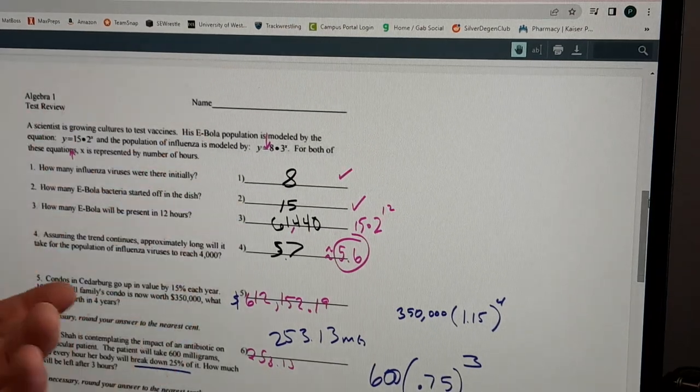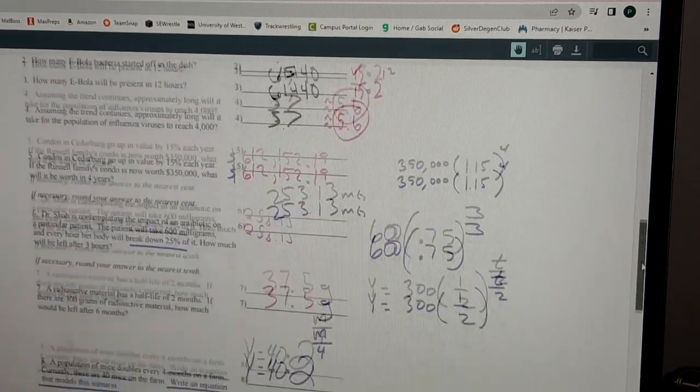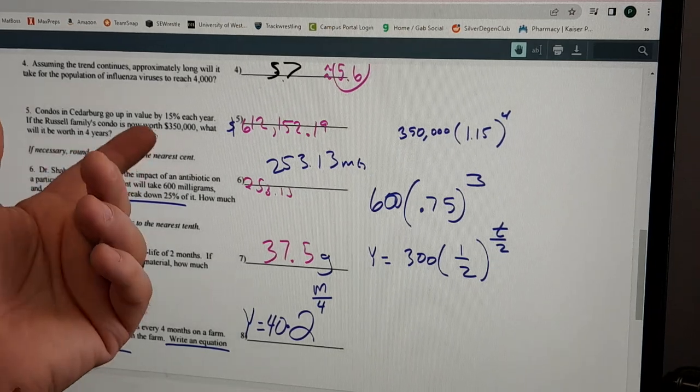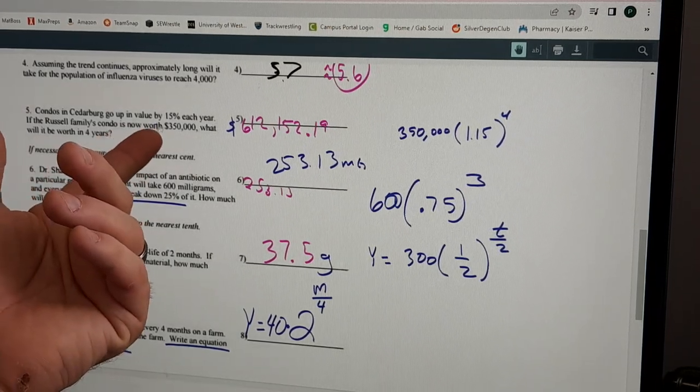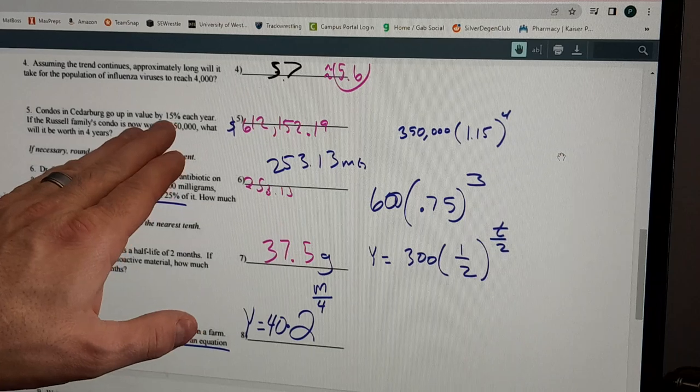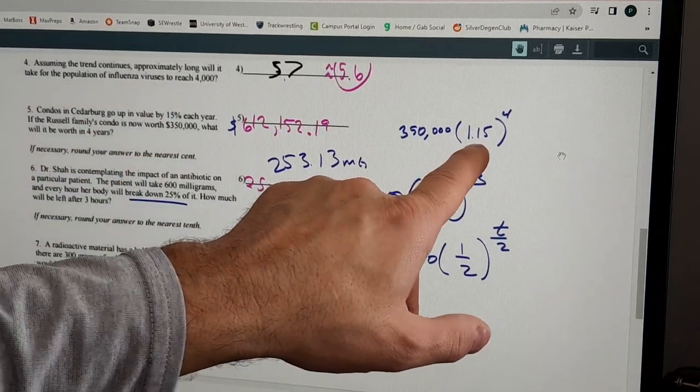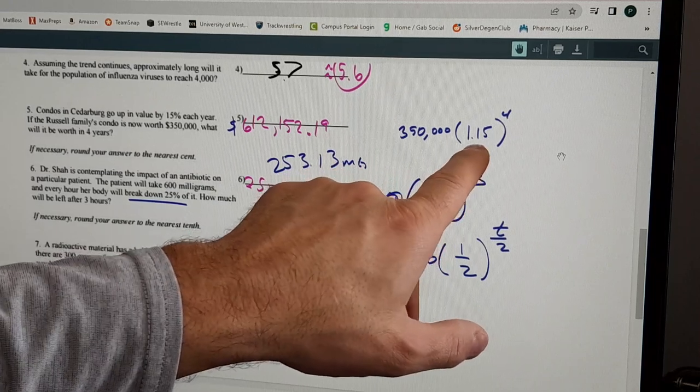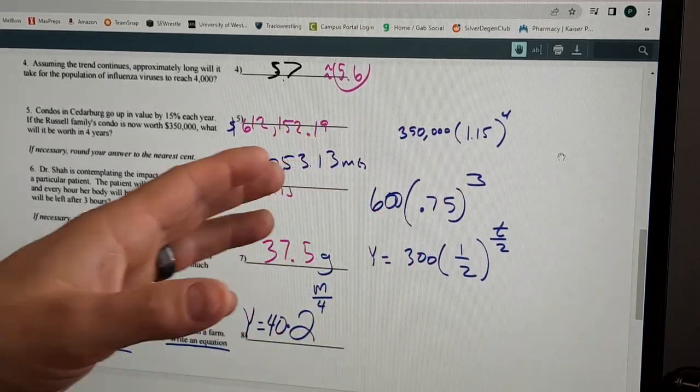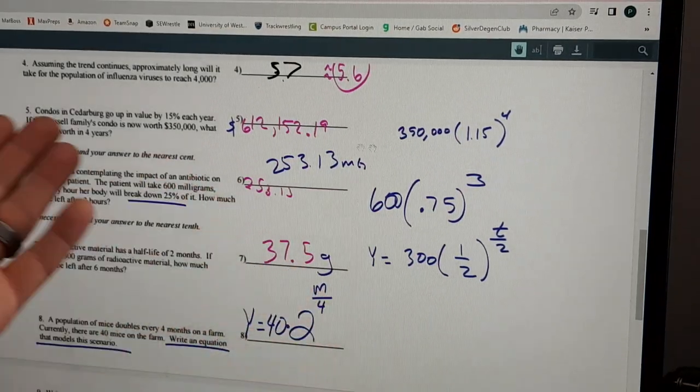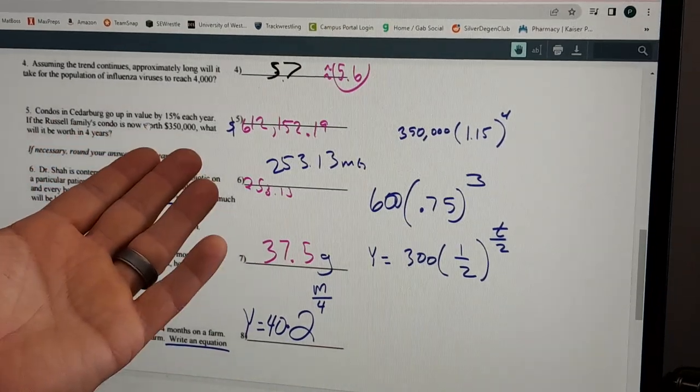Let's keep going - number five. If they go up in value 15% a year, what happens is they're going up. It says go up, so it's 1 plus the 15%, that's why you get 1.15. It's the 1 plus the r value, so you get 100% of the value plus 15% more.